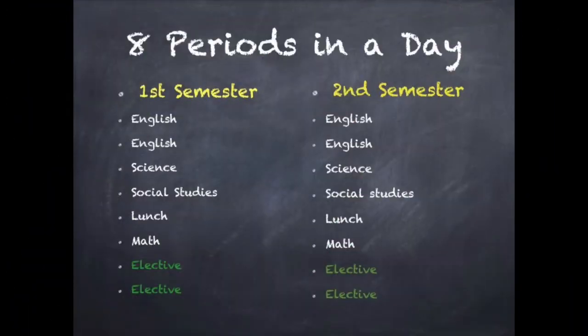Just like this year, you will have 8 periods in a day and the year is divided into 2 semesters — the first half of the year and the second half of the school year. Your classes of English, Science, Social Studies, Math, and of course lunch will all be scheduled for you and will last all year long. In addition to that, you will have 2 elective periods that you will need to choose electives to fill. With that in mind, let's take a look at the card and the electives from which you may choose.